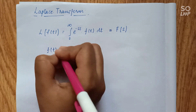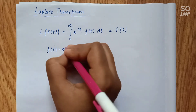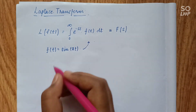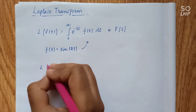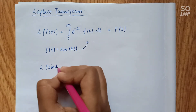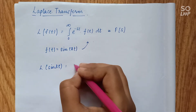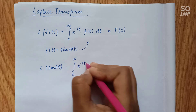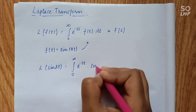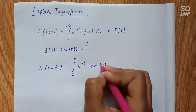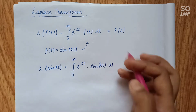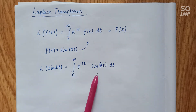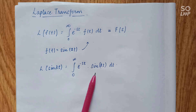In our given problem, f(t) is sine of 2t. We'll replace it in our formula, so the Laplace of sin(2t) will be the integration from zero to infinity of e^(-st) times sin(2t) dt.